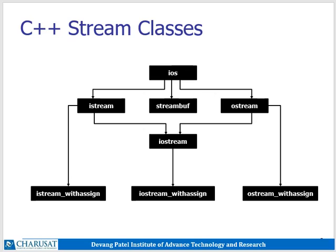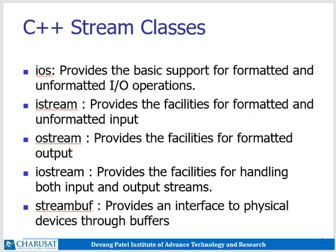In C++ stream class there are basically five classes. The first one is the ios class, which provides the basic support for formatted and unformatted input output. The second stream class is istream, which provides the facility for formatted and unformatted input. The third class is ostream, which provides the facility for formatted output. The next class is iostream, which provides the facility for handling both input and output stream. The last class is streambuf class, which provides an interface to a physical device through a buffer.